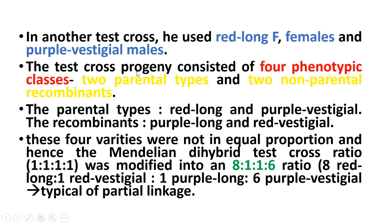In this case, the test cross of F1 female with a purple vestigial male produces two parental types and two non-parental recombinants. The parental types are red long and purple vestigial.